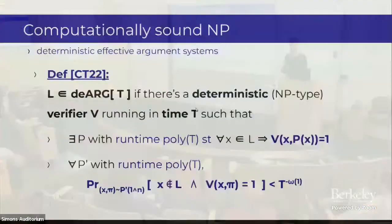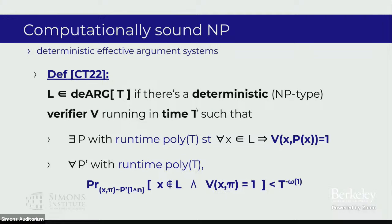I'd like to present a notion that's very new, from a work with Leija under submission. It's so basic that if you had been taught it in complexity 101 and told it was a notion from the 80s, you'd say 'of course.' This is computationally sound NP. We know NP: correct statements can be proved, incorrect statements cannot be proved. And we know argument systems from crypto — interactive proofs where no efficient adversary can convince you; you have only computational soundness. So this is the computationally sound version of NP: correct statements can be proved, and no adversary can find a written proof for an incorrect statement. There's no interaction, so it's an NP-type argument system.